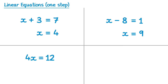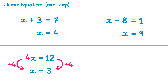Let's try another one. On the left hand side we have 4x, which means 4 multiplied by x. The opposite or inverse of multiplying by 4 is dividing by 4, so we're going to divide by 4 on both sides. On the left hand side, 4x divided by 4 is just 1x, and on the right hand side 12 divided by 4 is 3. We've now solved this equation.